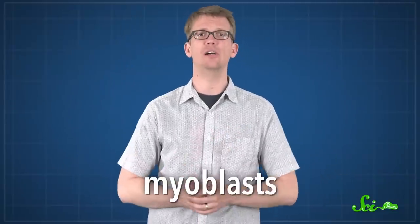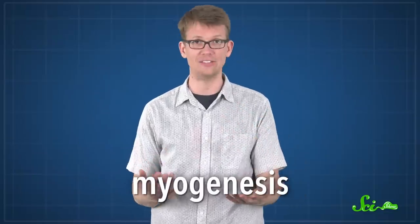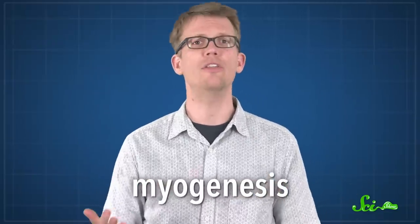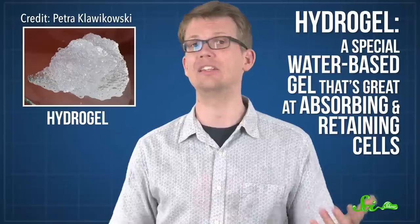This happens in a lab by culturing myoblasts, embryonic cells with the unique ability to differentiate into different muscle cells in a process called myogenesis. To make muscles grow how they want, the scientists create a scaffold in the form of a hydrogel, a special water-based gel that's great at absorbing and retaining cells.